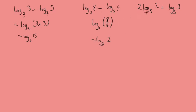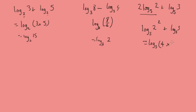For the next example, we first use the power law to turn log base 2 of 2 squared into 2 times log base 2 of 2, plus log base 5 of 3. Now 2 squared is 4, so we can use the multiplication rule: 4 times 3 gives log base 5 of 12.